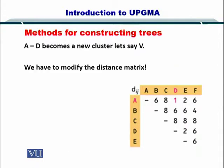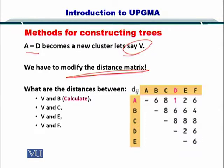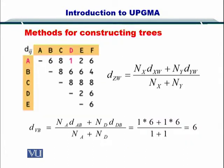Since A and D became a new cluster V, we have to modify the distance matrix. By combining the distance matrix with V, we need to compute the distance between V and B, V and C, V and E, V and F, because A and D is eliminated. This entire row will be eliminated. Let's see how it looks. Here is your distance matrix.